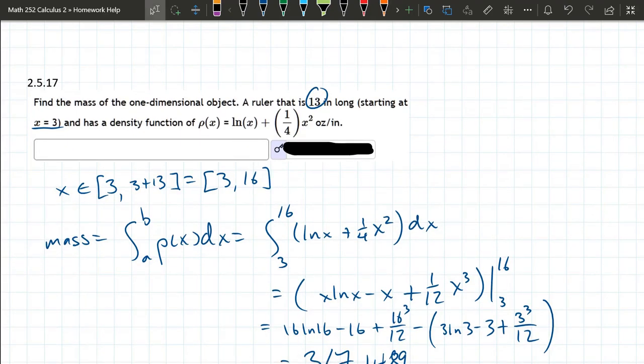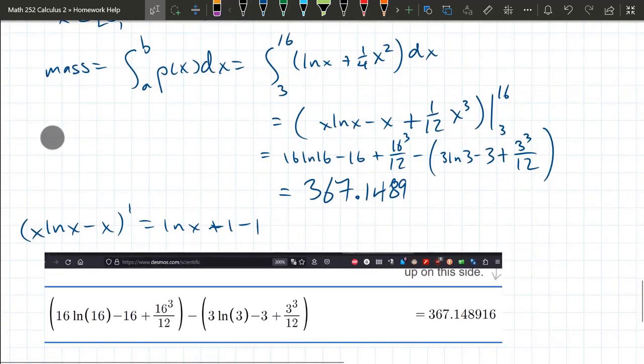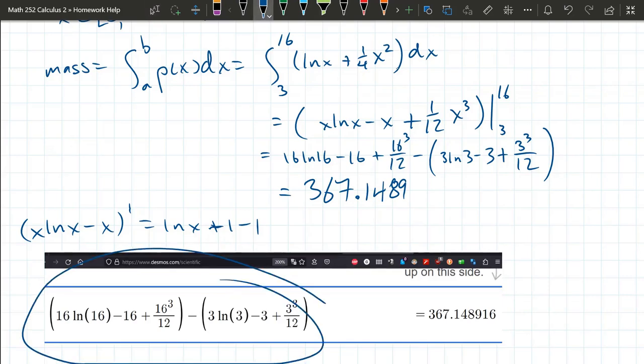Then it's just anti-power rule on the x squared term, and you just keep going. And plug it into a calculator, you'll get the decimal answer, and I believe it'll take the exact answer as well.